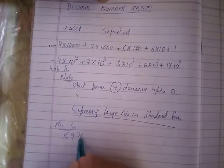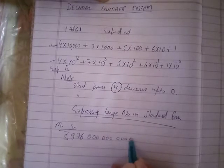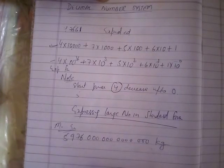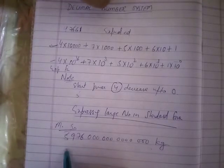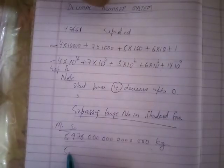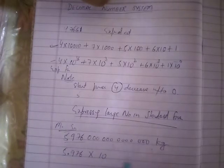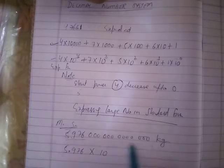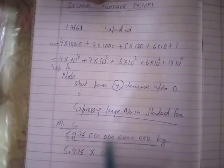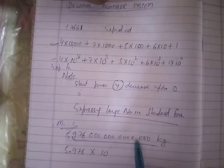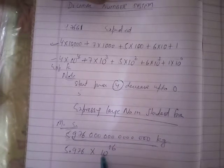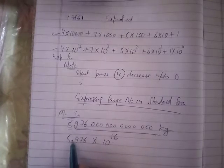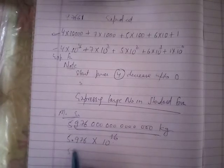5, 9, 7, 6, 0, 0, 0, 0, 0, 0. The standard form is 5.976. This is 5.976 times 10 to the power. The total is 16. So this is 5.976 times 10 to the power 16.